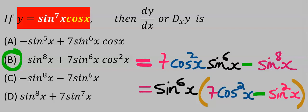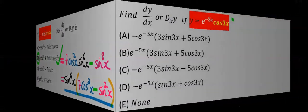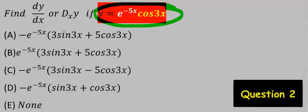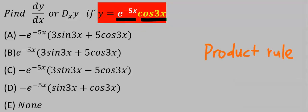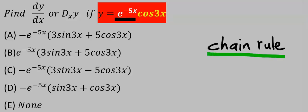Next let's consider this question. This function is multiplying this function, hence we're going to apply product rule. But when differentiating this alone I'm going to apply chain rule.